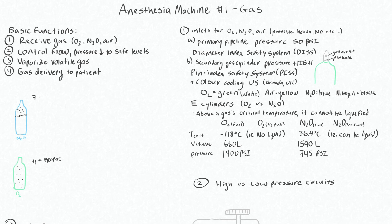When you measure the pressure coming off the nitrous tank it will be 745 PSI even as you start using it up. As the liquid turns into gas and the level drops, all that space will still be gas at 745 PSI, because that's the pressure nitrous exerts in its gas form in the enclosed container. So even when your nitrous tank is half full — 795 liters instead of 1590 — the pressure will still read 745 PSI.